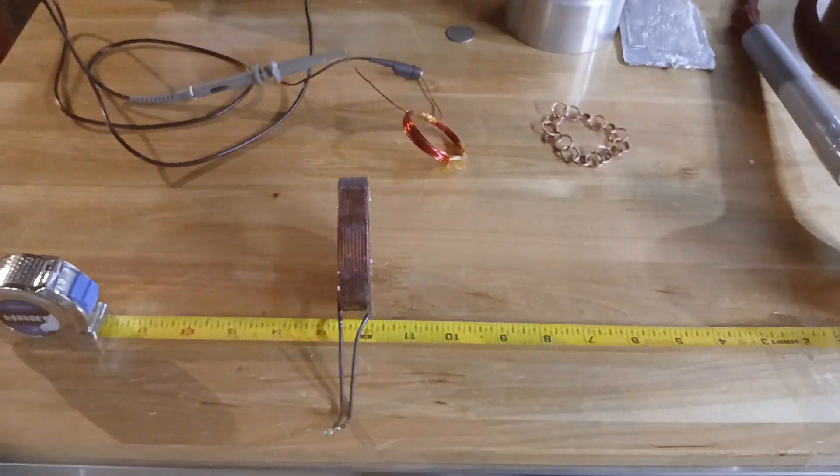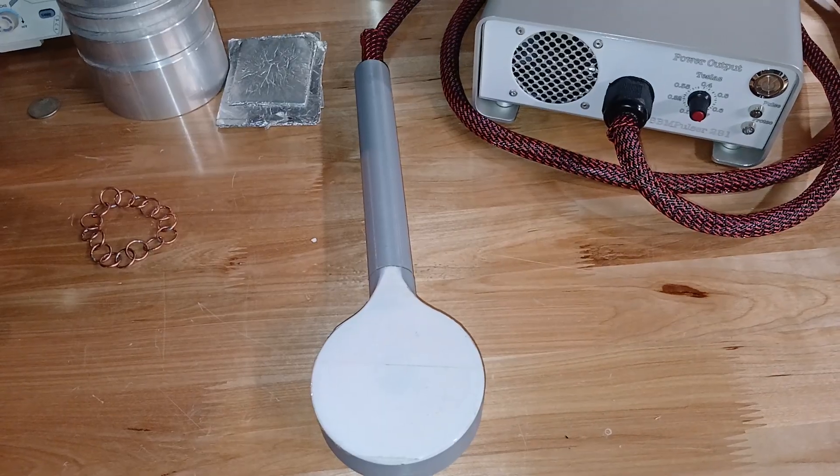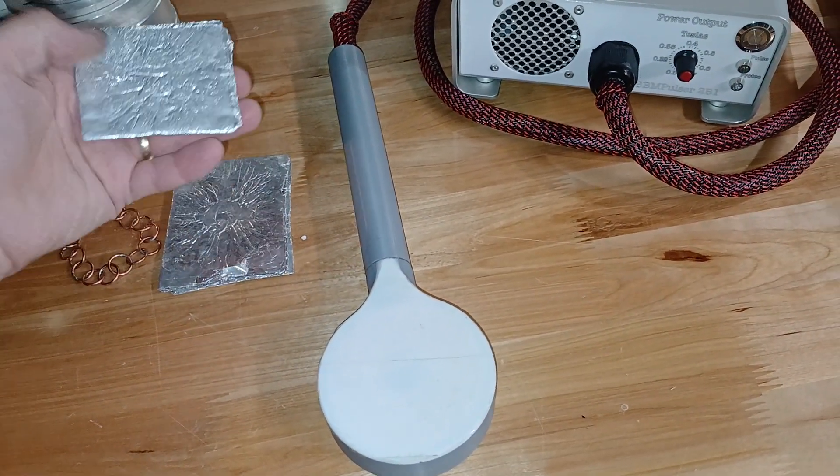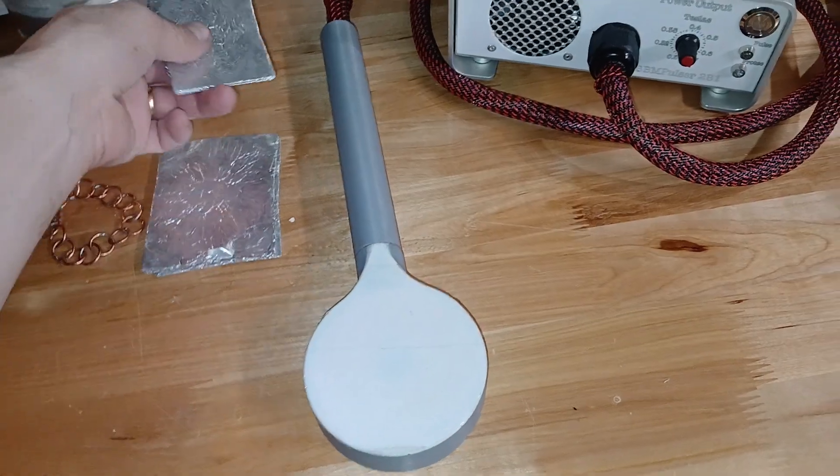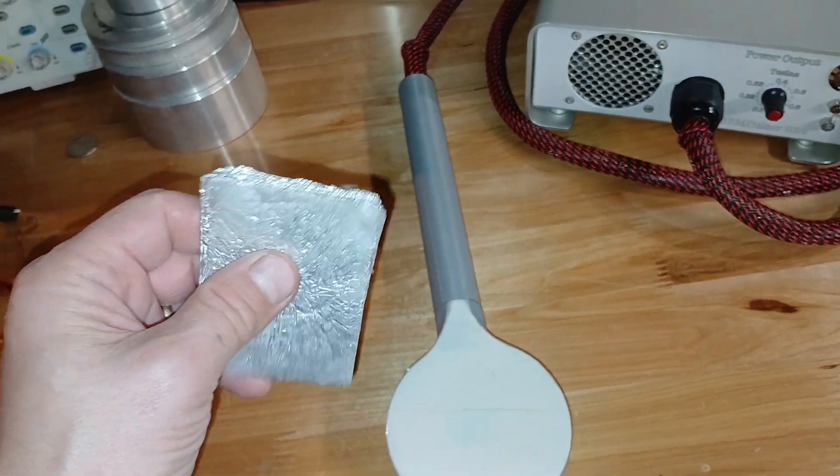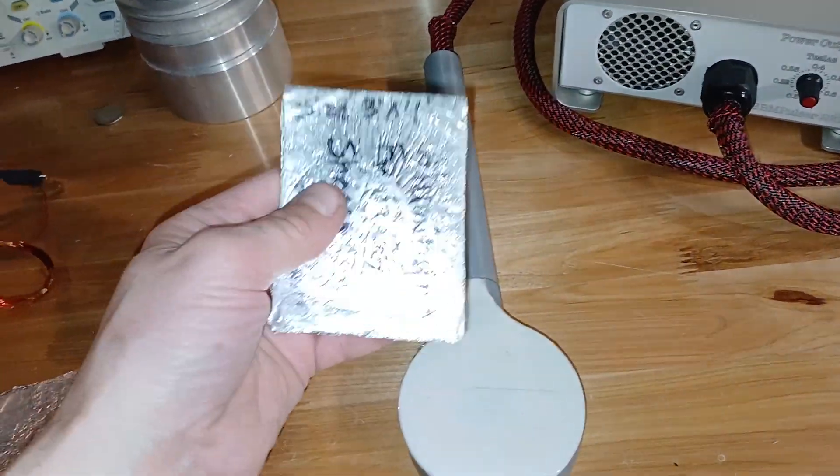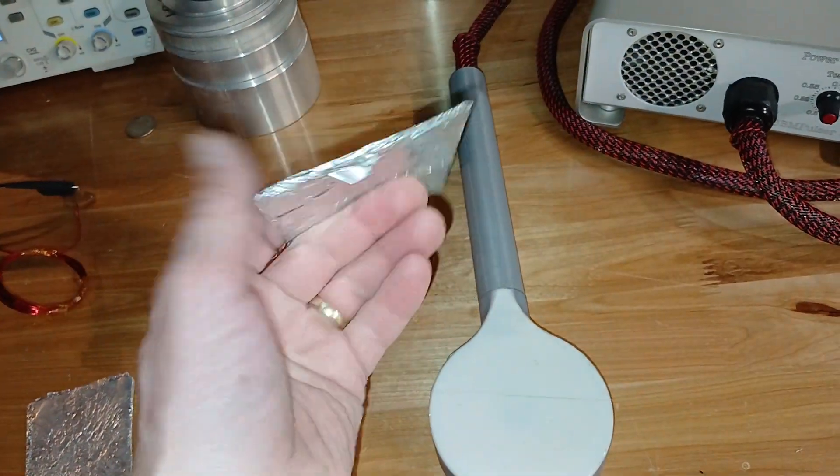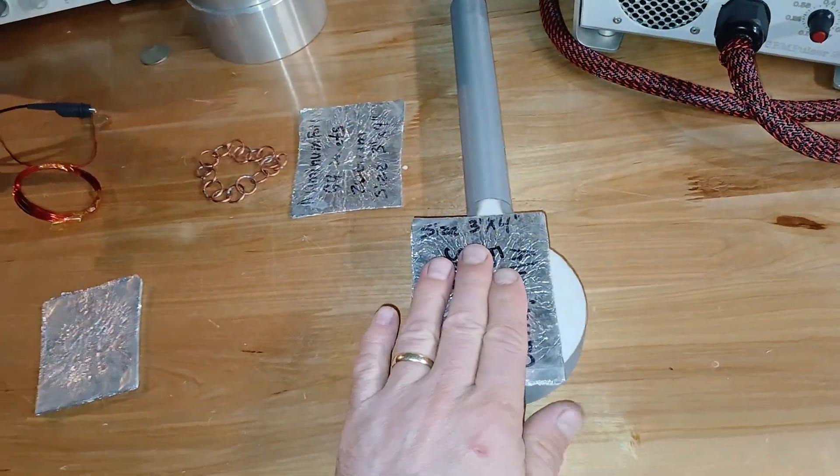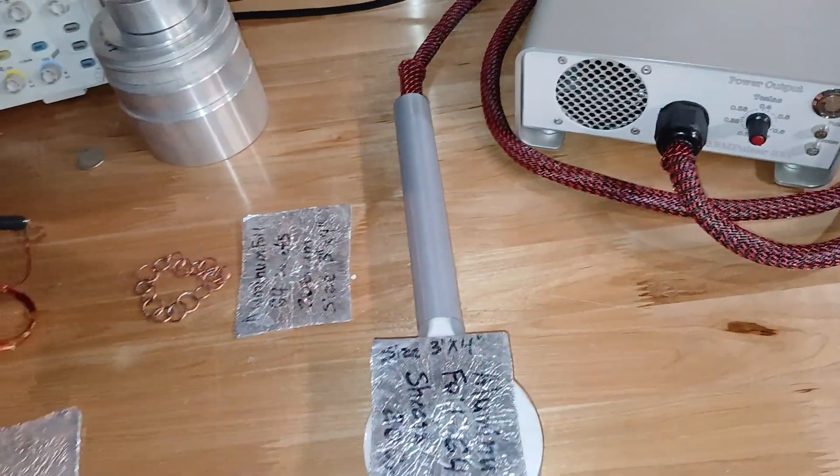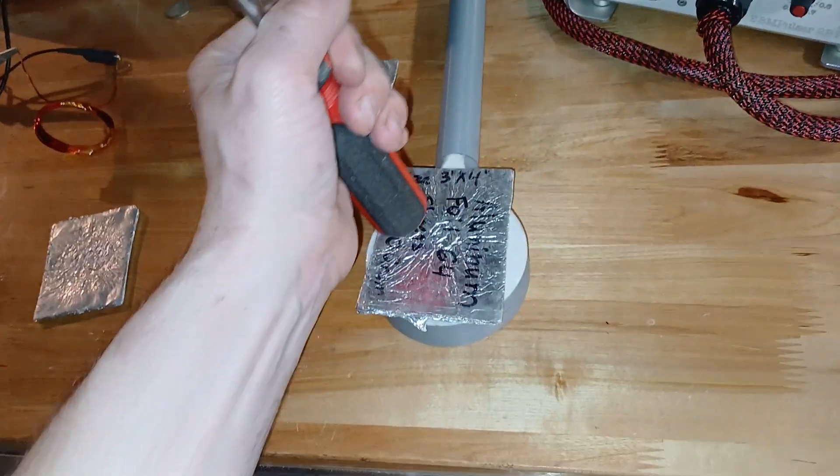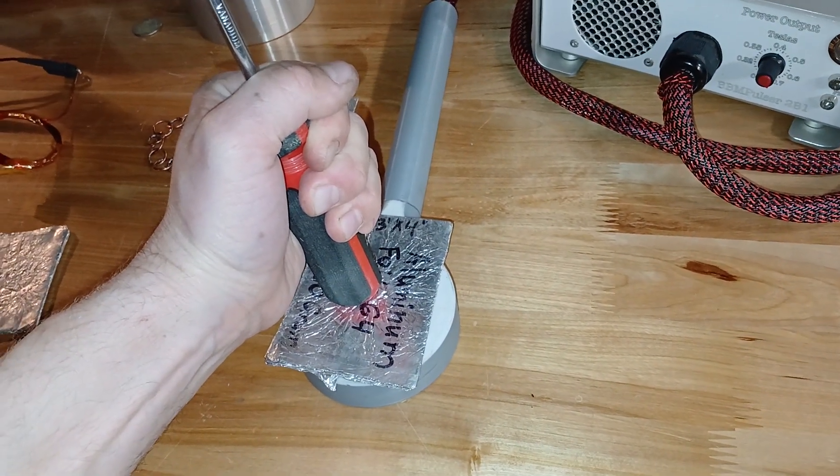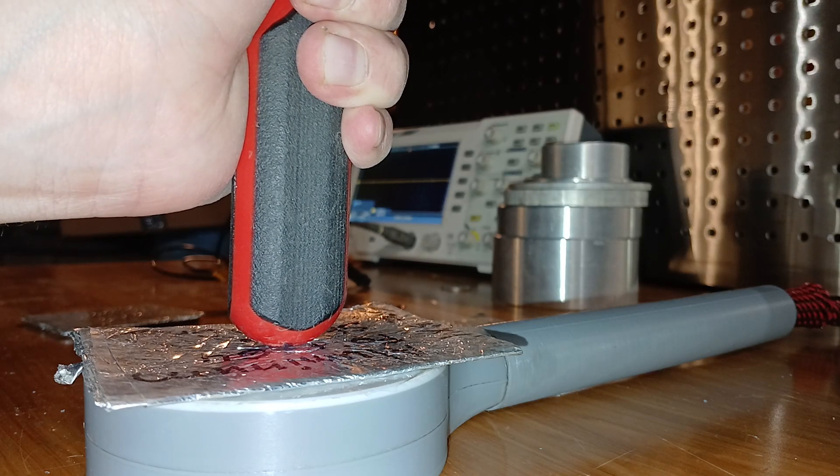That's test number one. For the second test I'll do a bend test. This is pretty thick, I don't think I can bend this, this is for stronger pulsers. But this one is 20 grams, 64 sheets of aluminum heavy duty kitchen foil. I'm going to place it on the coil and hold it with a screwdriver just like this. Let me try to energize it somehow, I only have two hands. Let's energize it.